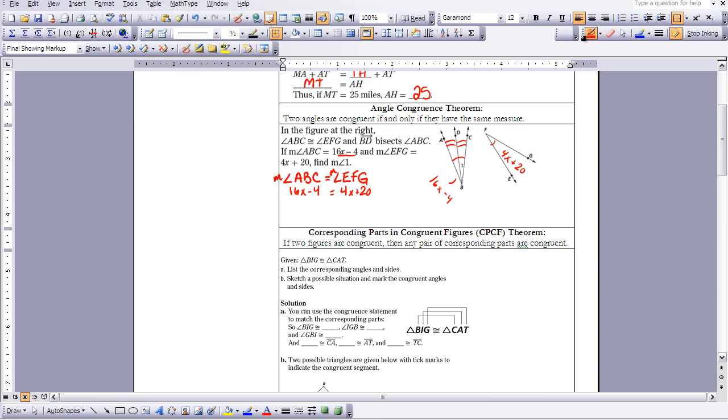Now we want to solve our equation for X. So I'm going to subtract 4X from both sides. And add 4 to both sides. So that means 12X is going to equal 24. And then X would equal 2.